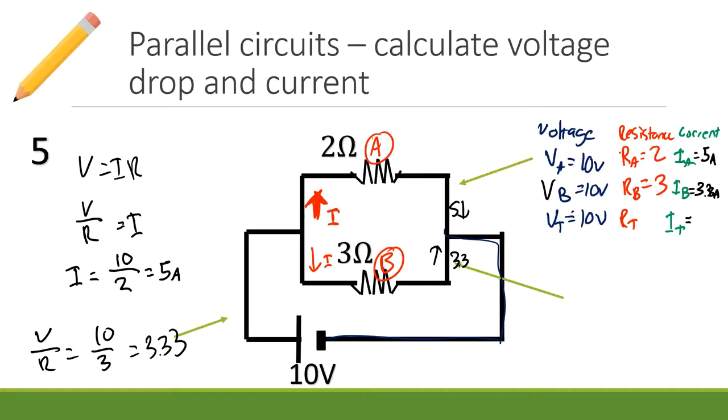And this actually proves one of our points as well. We said at the start, there should be more current up than down. We've got 5 amps going up and we've only got 3.33 amps going down. There is more current going up. So that works. That ticks this hypothesis.